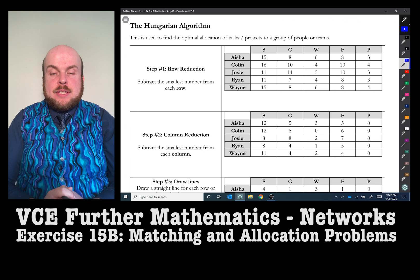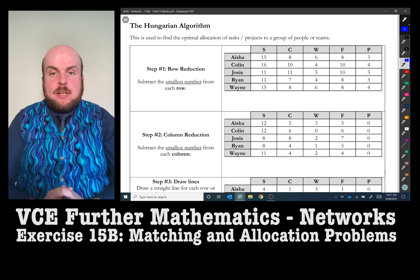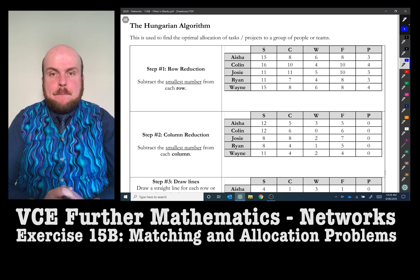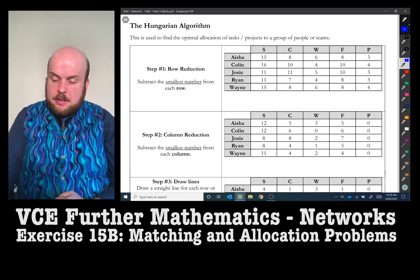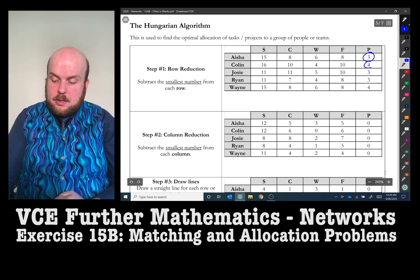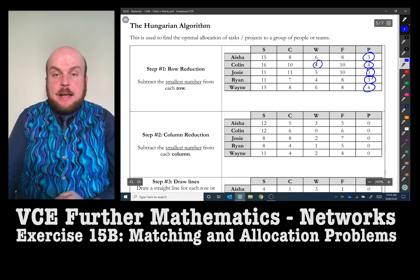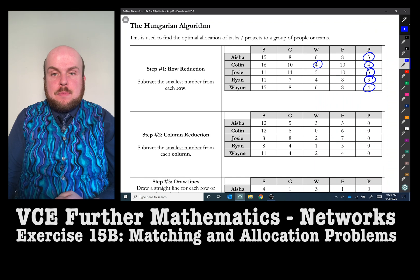We're going to start with these processes. The first thing that we do is the row reduction. What you do is you subtract the smallest number in each row from all of the other numbers. So identify the smallest number in each row. Three, four, three, three, and four. So minus every number in that row by that smallest number.